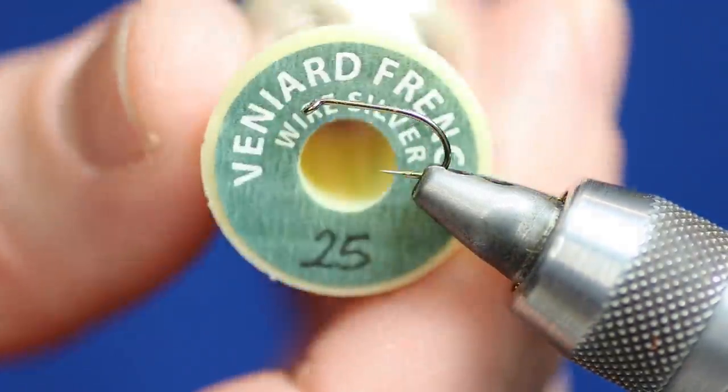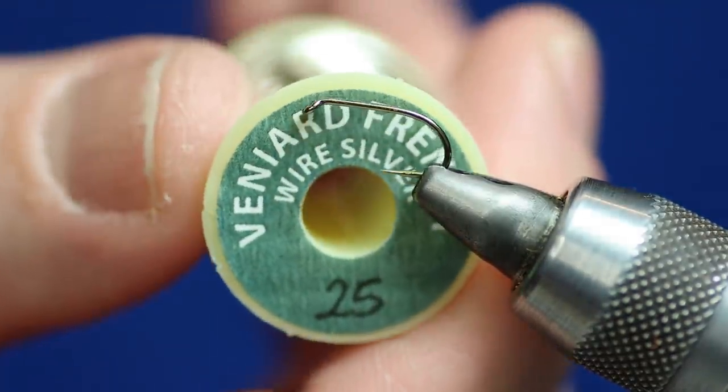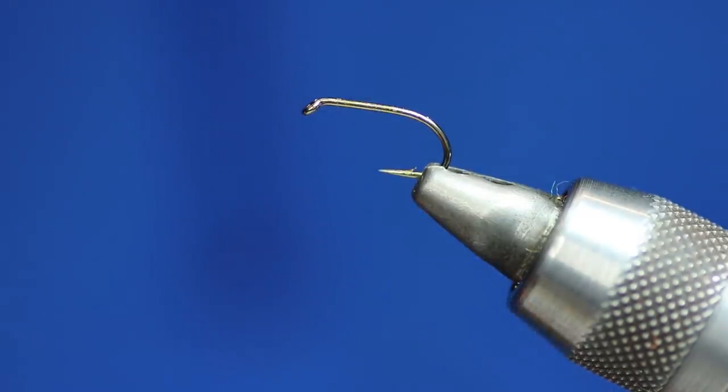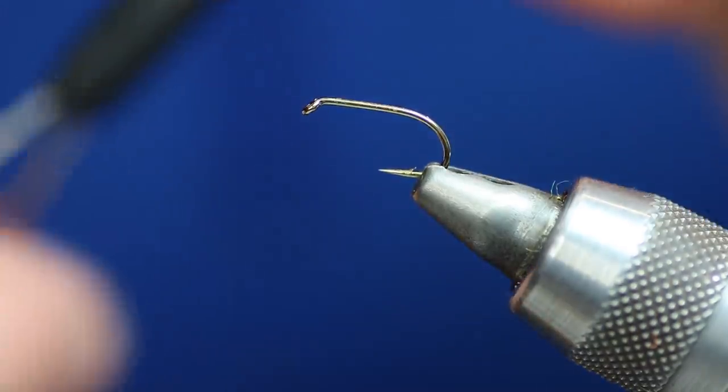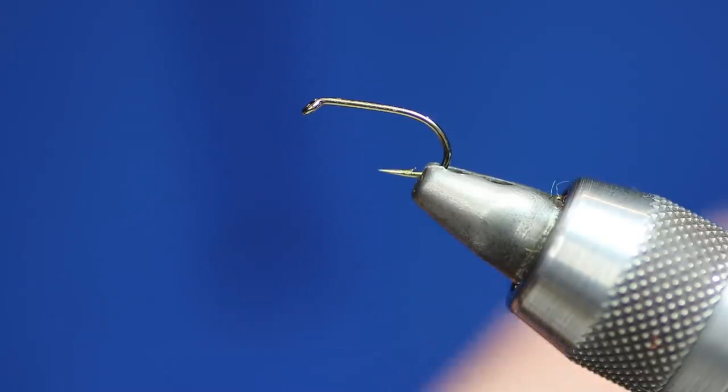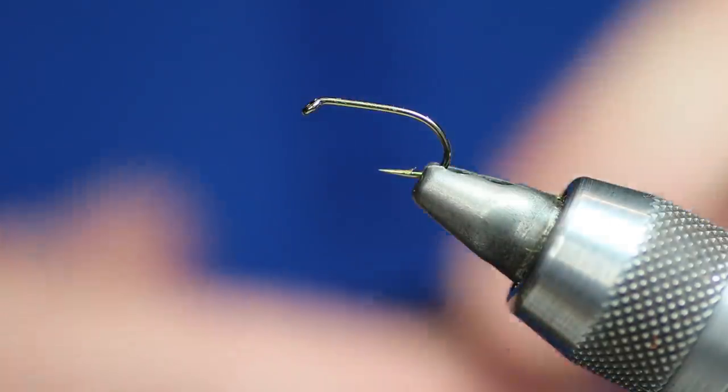We're going to use some Veniard's French silver wire for the rib. That's it. We are going to use some gels, some resins, but I'll show you a bit later in the video what ones they are because they're not that well known.